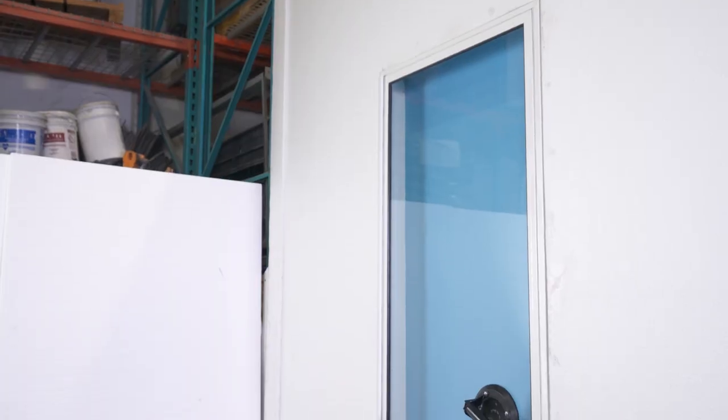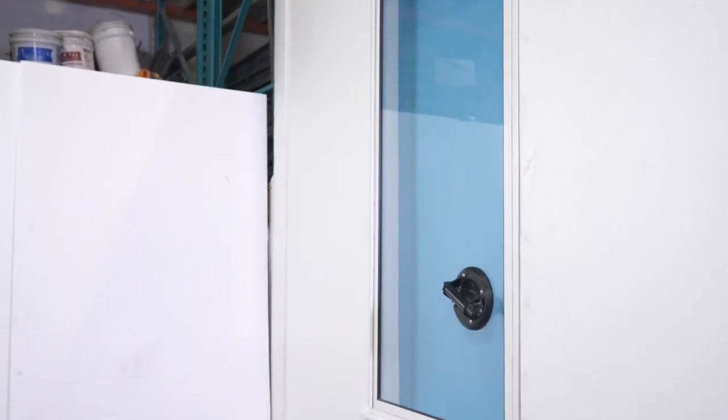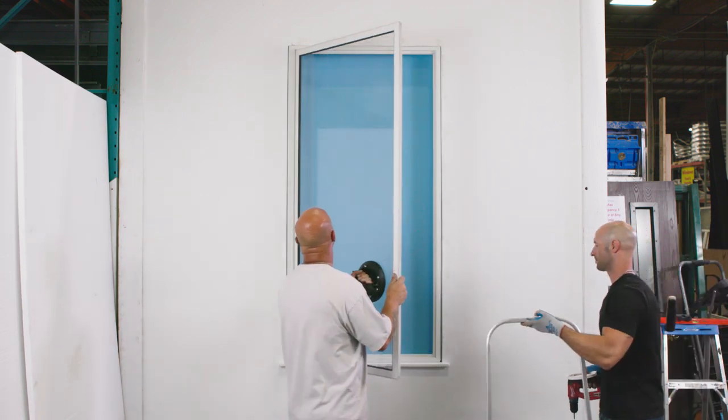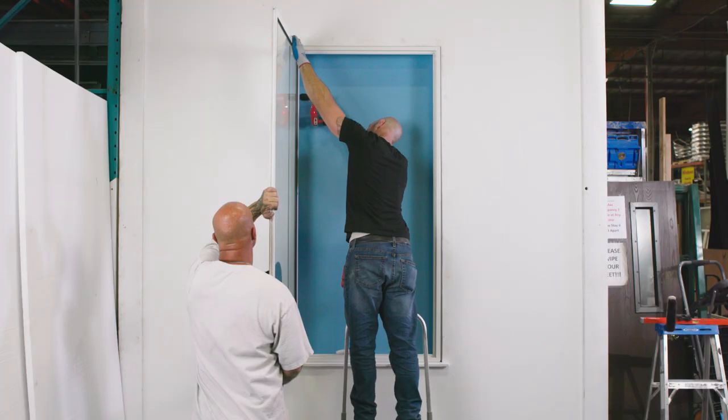Once that's done, fit the frame back into the opening and use a suction cup to open the glass, allowing you to access the inside of the frame where you'll attach the frame to the opening with screws.